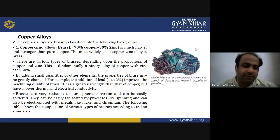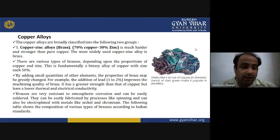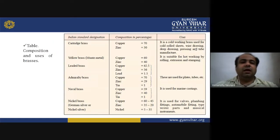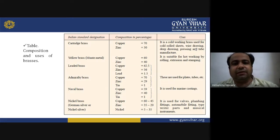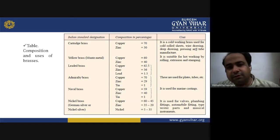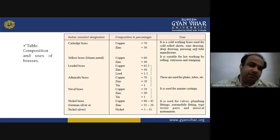Brass can be easily fabricated by pressing, spinning and can be electroplated with metals like nickel and chromium. Various types of brasses according to Indian standards include: cartridge brass (70% copper, 30% zinc), used for cold rolled sheets, wire drawing, deep drawing, pressing and tube manufacture. Yellow brass, also known as Muntz metal, contains 60% copper and 40% zinc, suitable for hot working by rolling, extrusion or stamping.